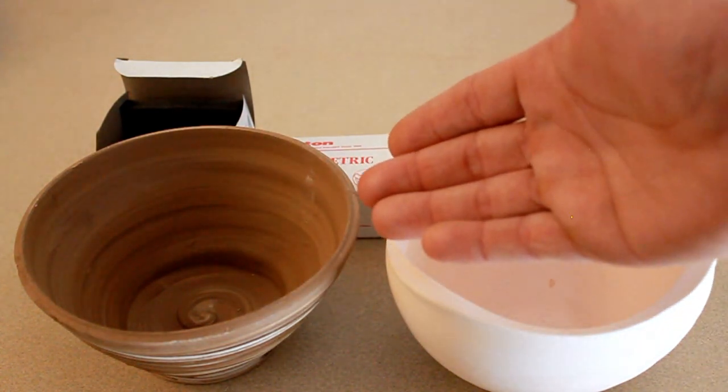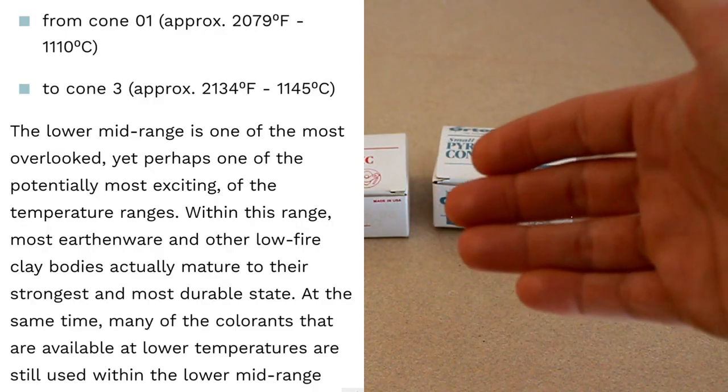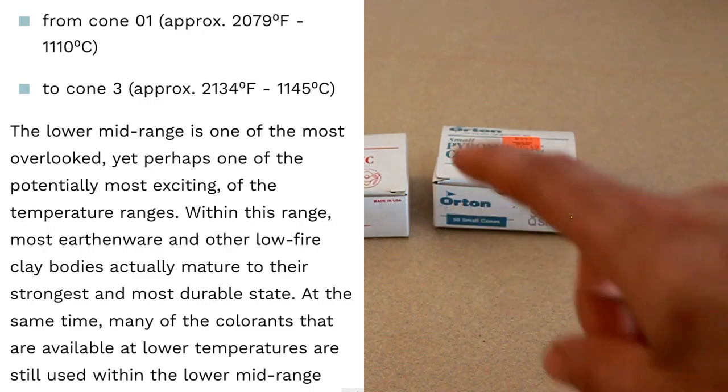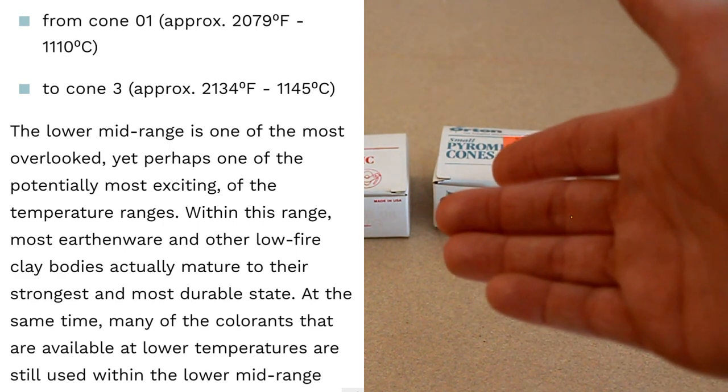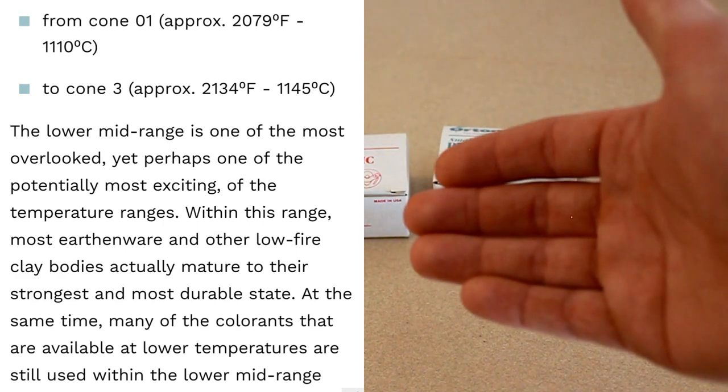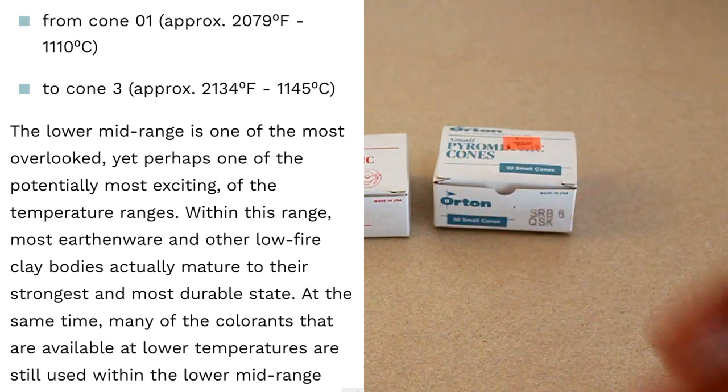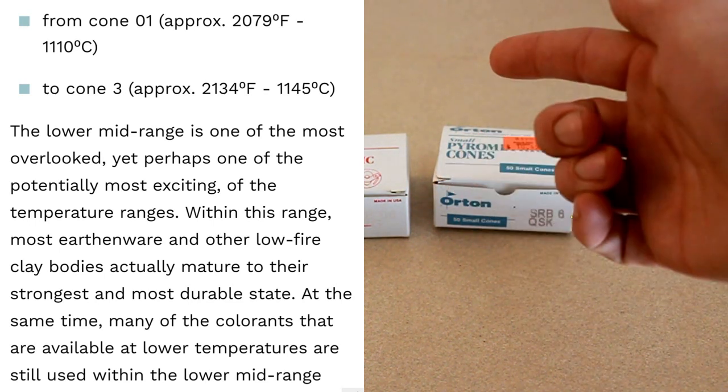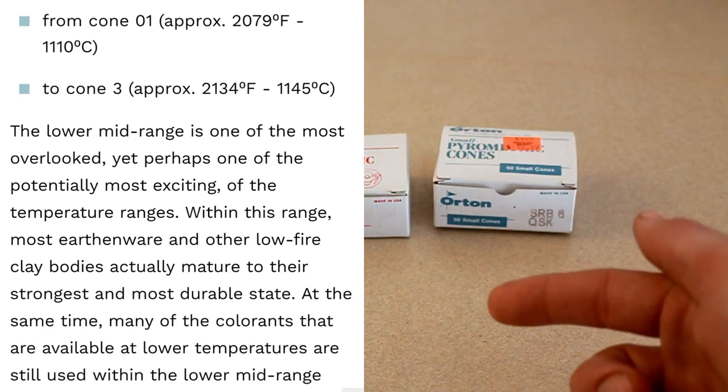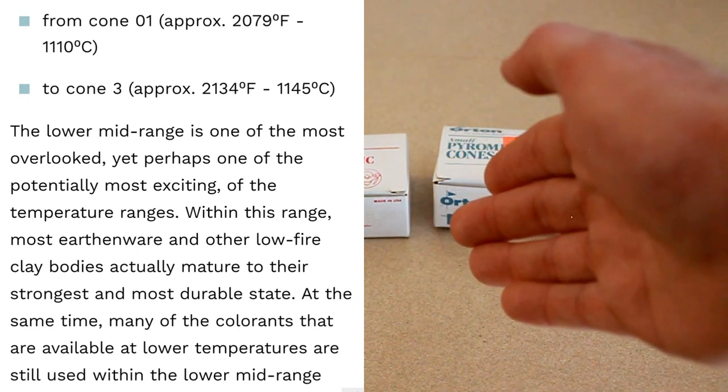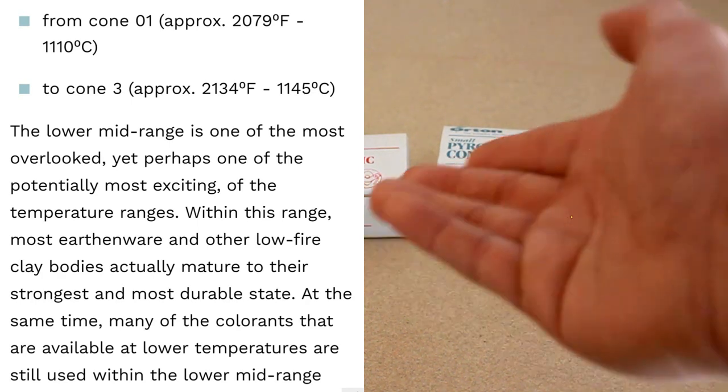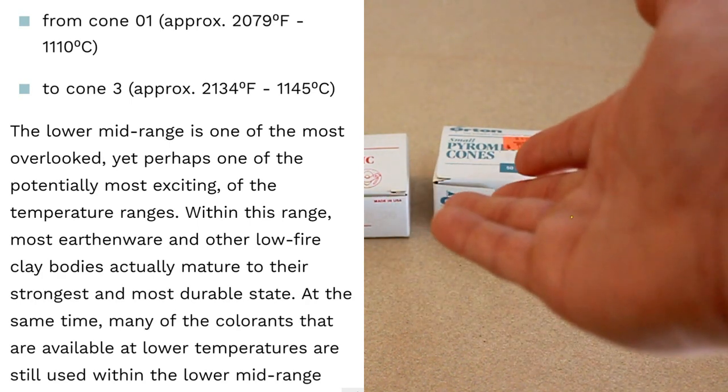Then we have the lower mid-range of fire. This here is from cone 01, which is around 2079 degrees Fahrenheit, to cone 3, which is 2134 degrees Fahrenheit. I'm not going to lie to you guys. Nobody really uses this range of glazes. I mean, I would like to tell you some information about it, but it's so overlooked that I don't have any info on it because nobody uses it.